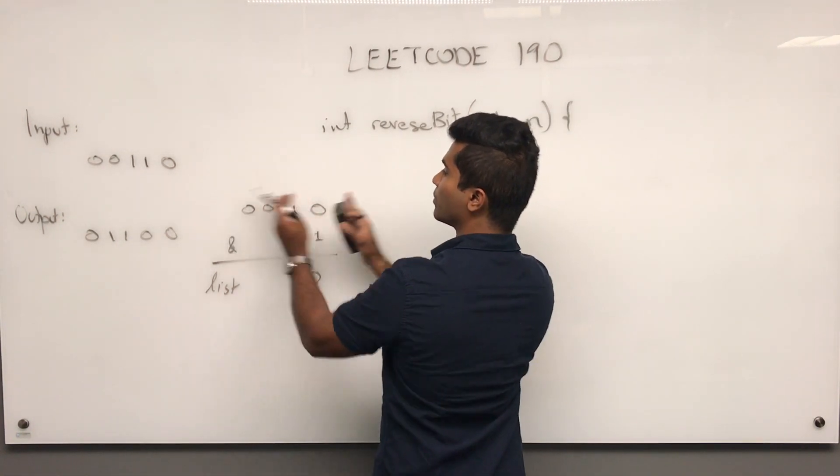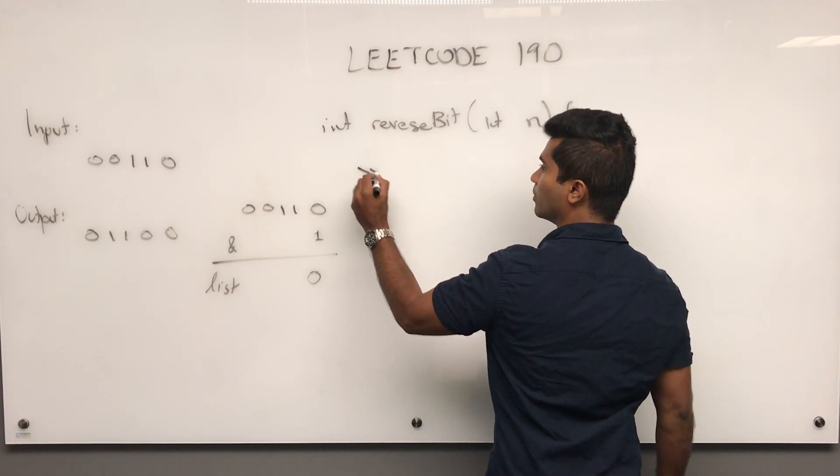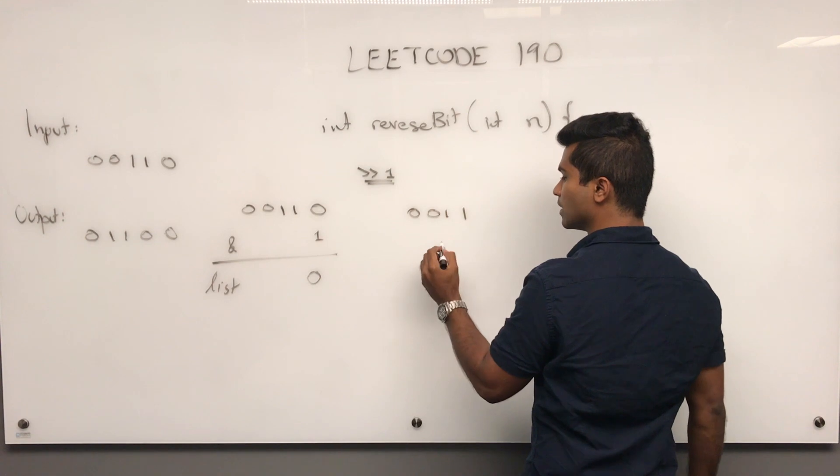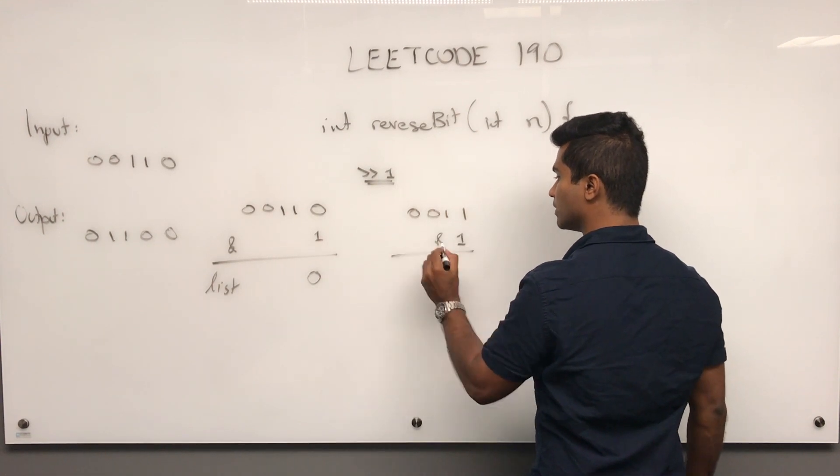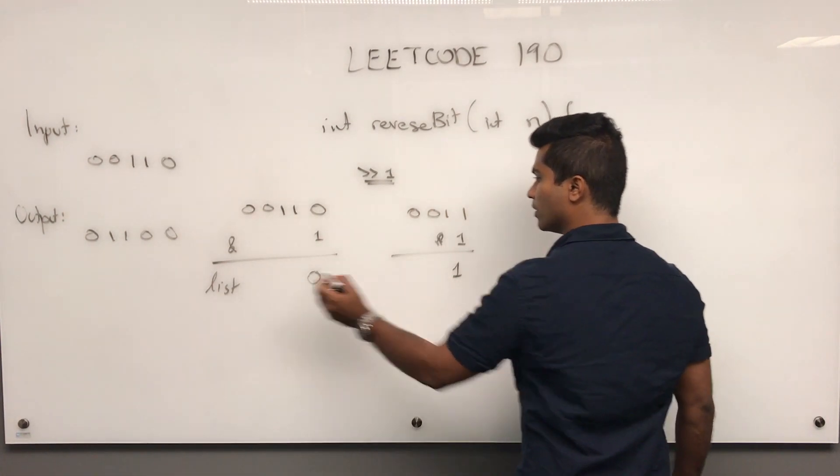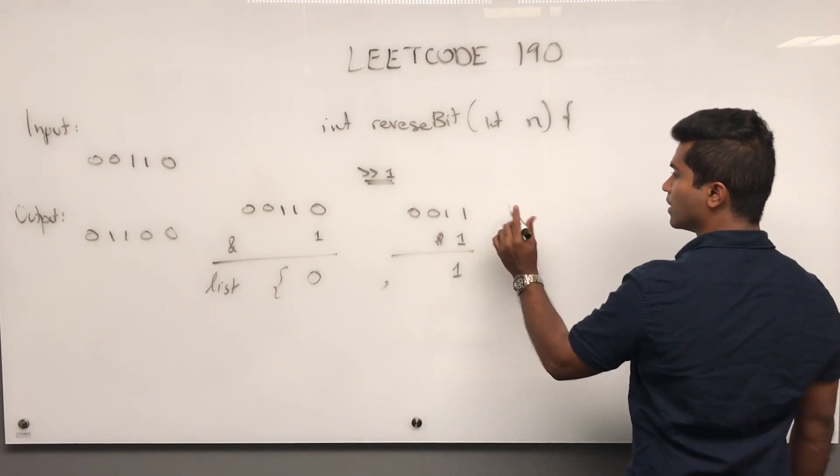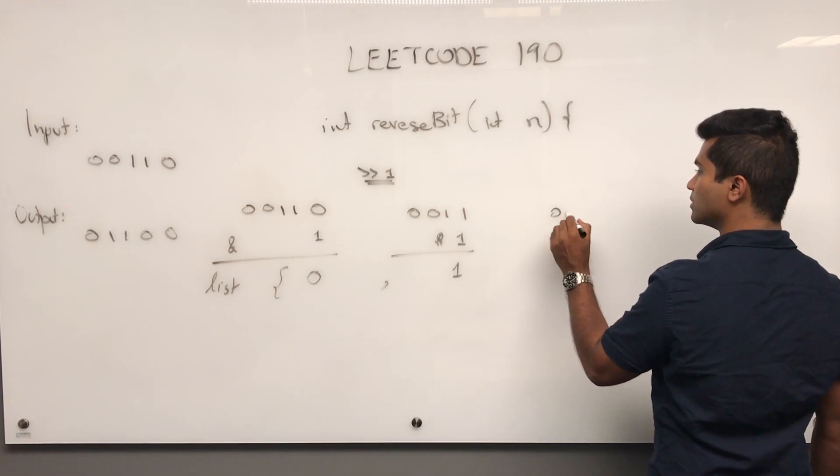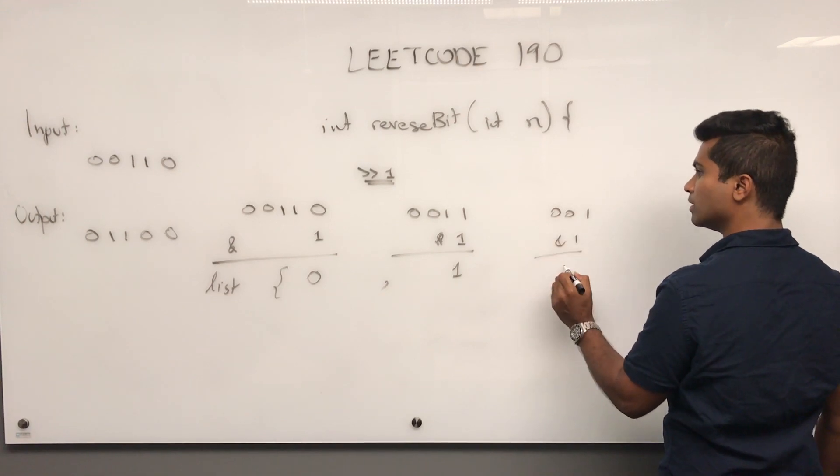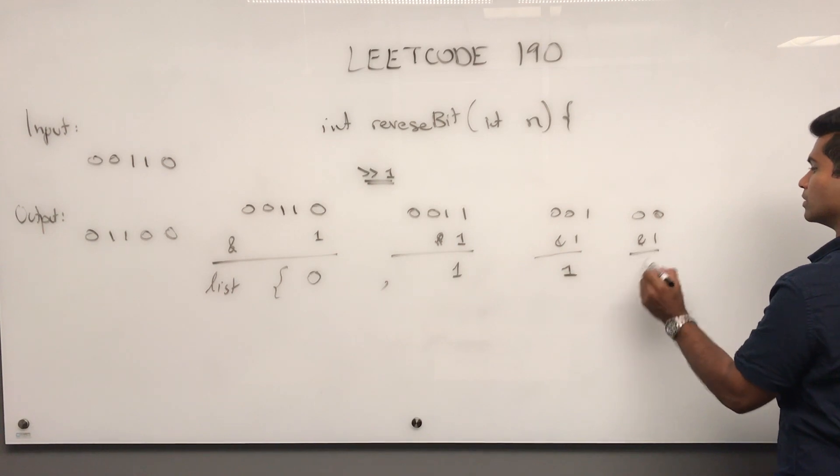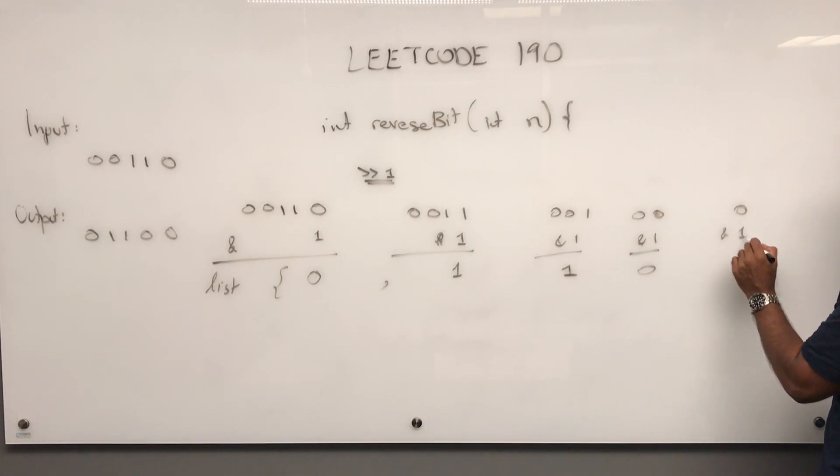I'll be using shift for that, which pushes this over. I do AND 1 and get back 1, so I store that. Push it over again: 0, 0, 1 AND 1 gives 1. Push again: 0, 0 AND 1 gives 0. 0 AND 1 gives 0.